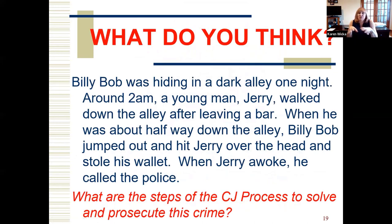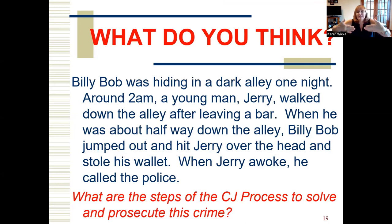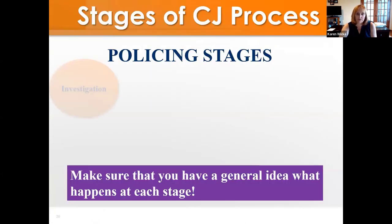Let me switch topics. Think about this: Billy Bob was hiding in a dark alley one night. Around 2 a.m., a young man named Jerry walked down the alley after leaving a bar. When he was about halfway down, Billy Bob jumped out, hit Jerry over the head, and stole his wallet. Jerry awoke and called the police. What are the steps that the criminal justice process will use to solve and prosecute this crime? What happens to Billy Bob? These are the steps in the criminal justice process.